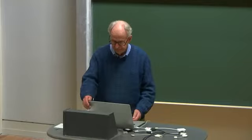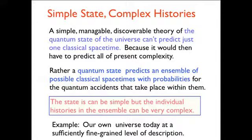So we want to find out what the state is. Now, one thing to mention has to do with complexity. A simple, manageable, discoverable theory of the initial condition of the universe that you might write down, Stephen did, can't predict just one classical spacetime. Because if it did, it would have to predict all the complexity that we see in the universe, the particular arrangement of people where they sat in these chairs. And that would mean intuitively that the description of the state would be impossibly complex itself.